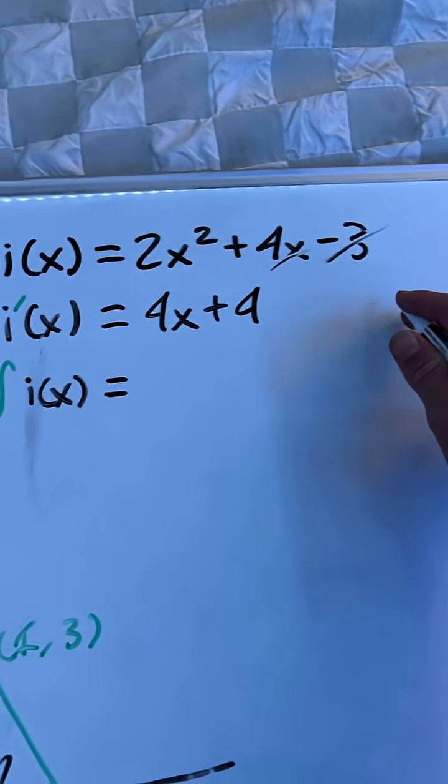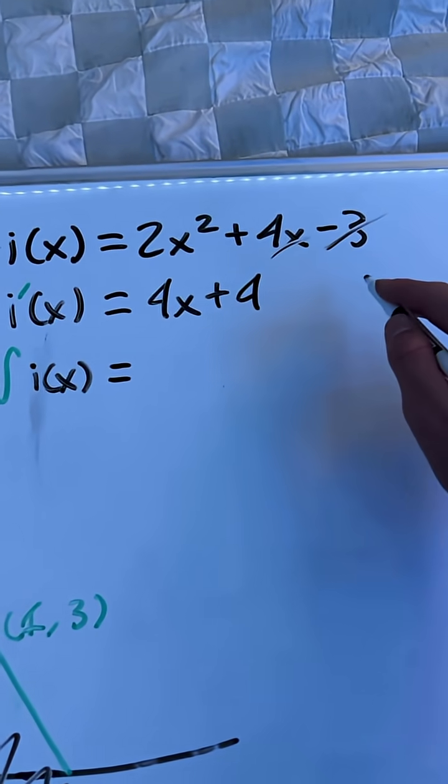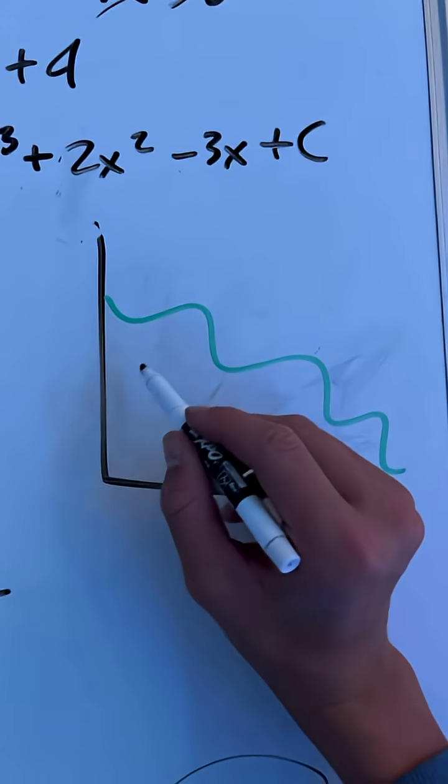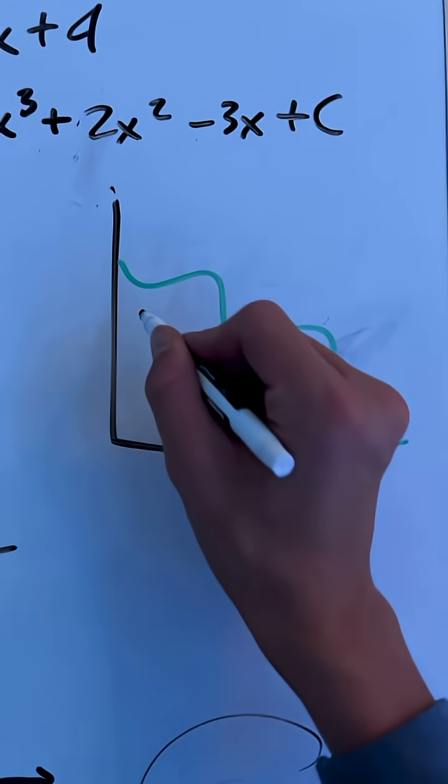And then the integral is the reverse process. You add one to each exponent, add a C, and then divide each by the new exponent. So this becomes, boom. So in general, the derivative is all the slopes, and the integral is the area under the function.